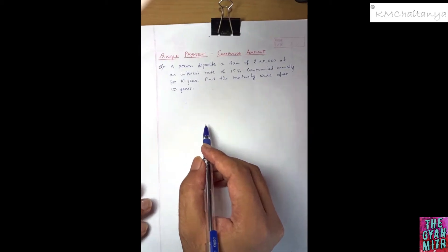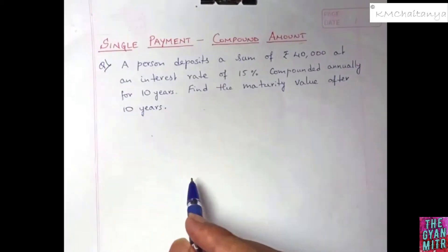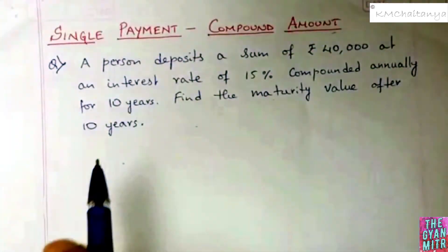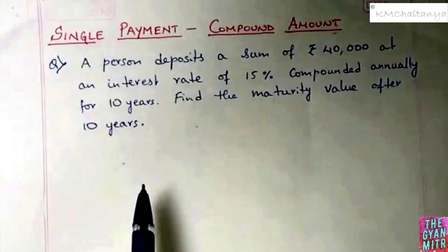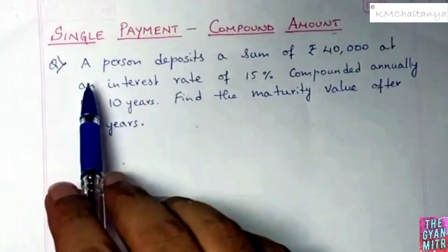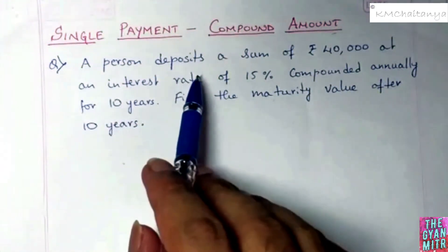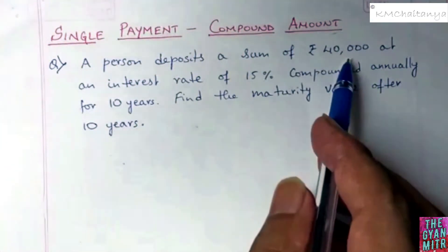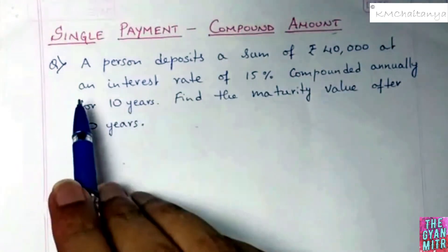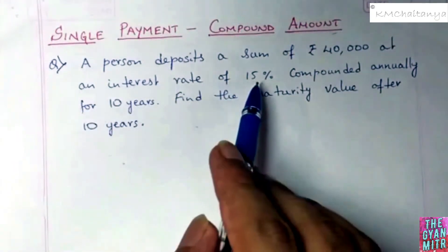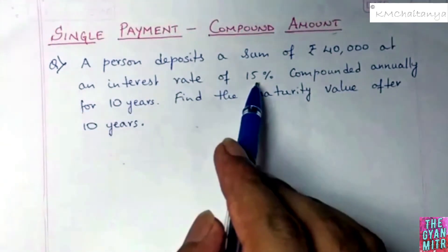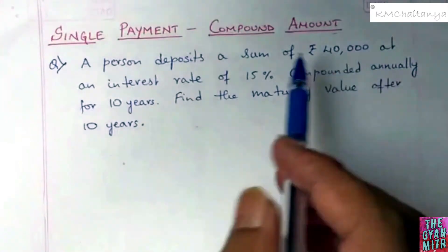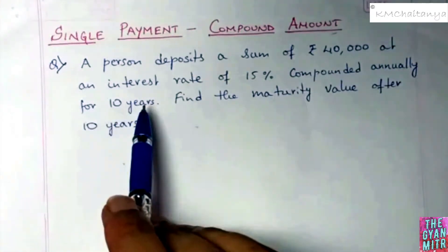We will now solve a problem on single payment compound amount. A person deposits a sum of rupees 40,000 at an interest rate of 15% which is compounded annually for 10 years.